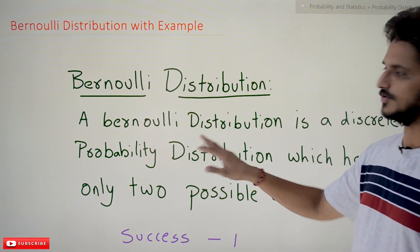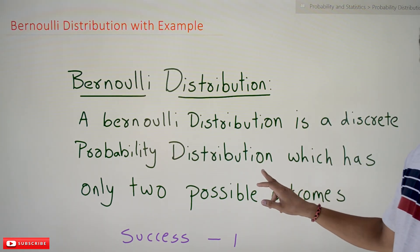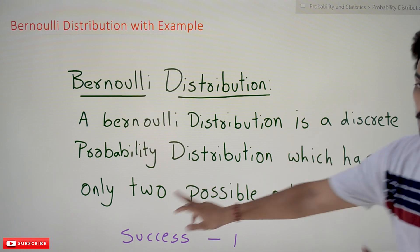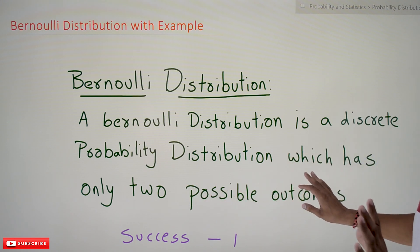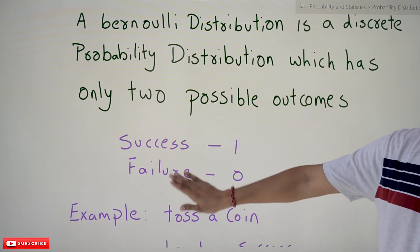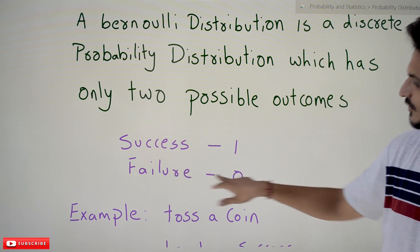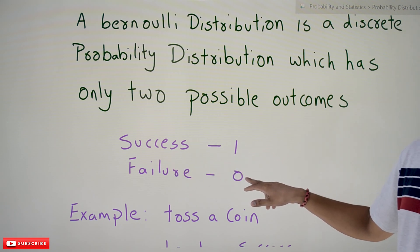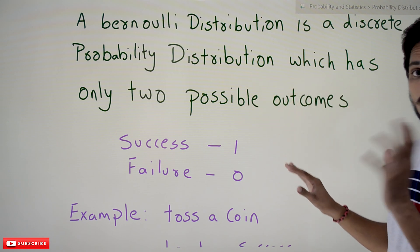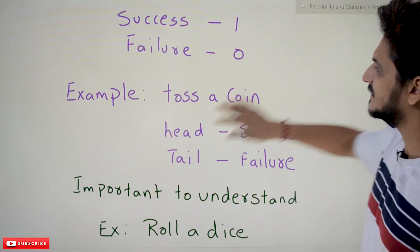Bernoulli distribution is very easy to understand, but it is used in our coming classes on binomial and Poisson distribution — everything is linked one by one. A Bernoulli distribution is a discrete probability distribution which has only two possible outcomes. We call one outcome success and the second one failure. Success is given the variable value 1, and failure is given the value 0.